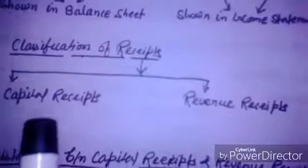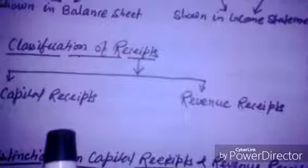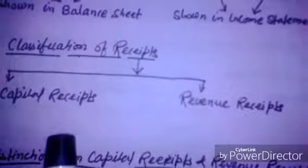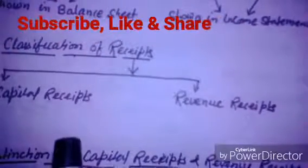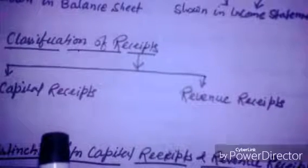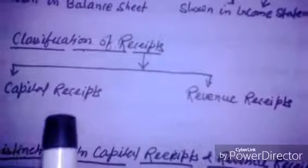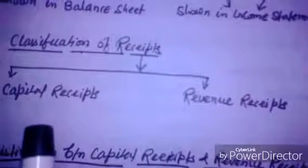First, let us understand what capital receipts are. Capital receipts may be defined as the receipts which arise out of some casual or non-recurring transaction, and not out of the ordinary operations of the business. In other words, capital receipts refer to those receipts which are not revenue in nature.